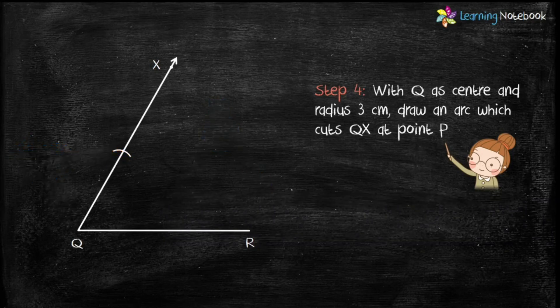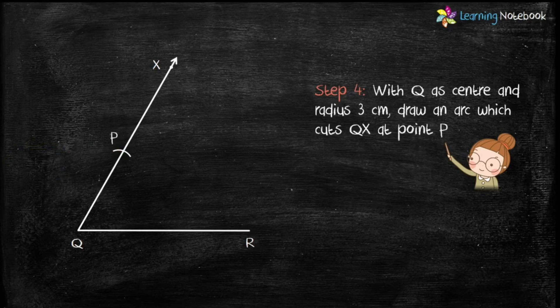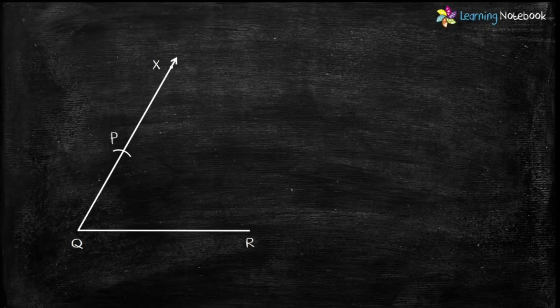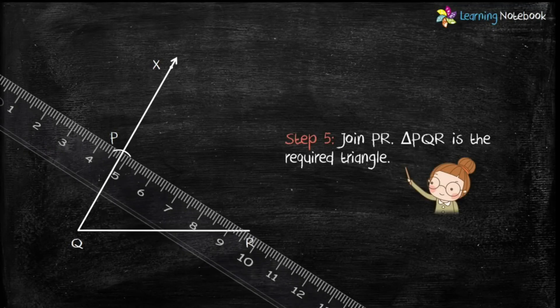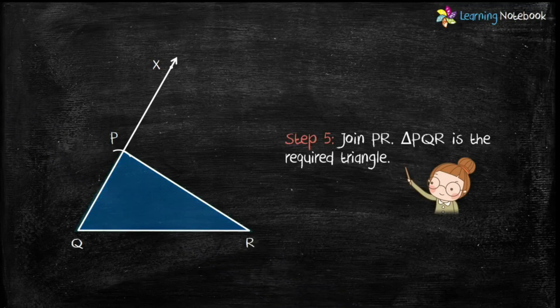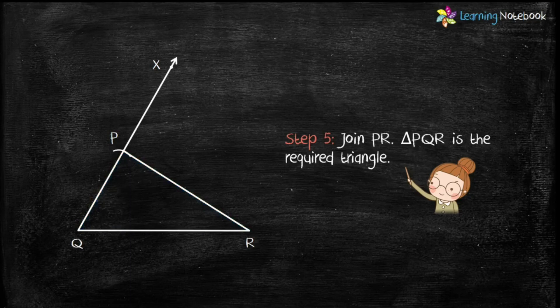Now, in the last step, join PR and triangle PQR is the required triangle. So students, this was the construction of the triangle when we are given two sides and the included angle.